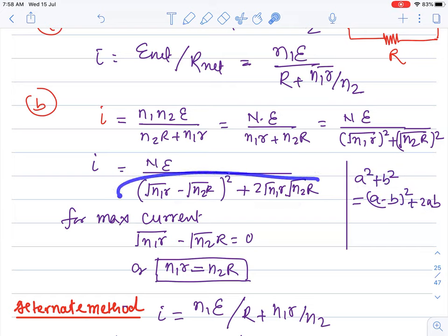Using the formula a² + b² = (a - b)² + 2ab format. Now denominator, when minimum, current becomes maximum. This term can be zero. This term zero we can write, zero on right side, square it, so this is the relation. This is the condition.